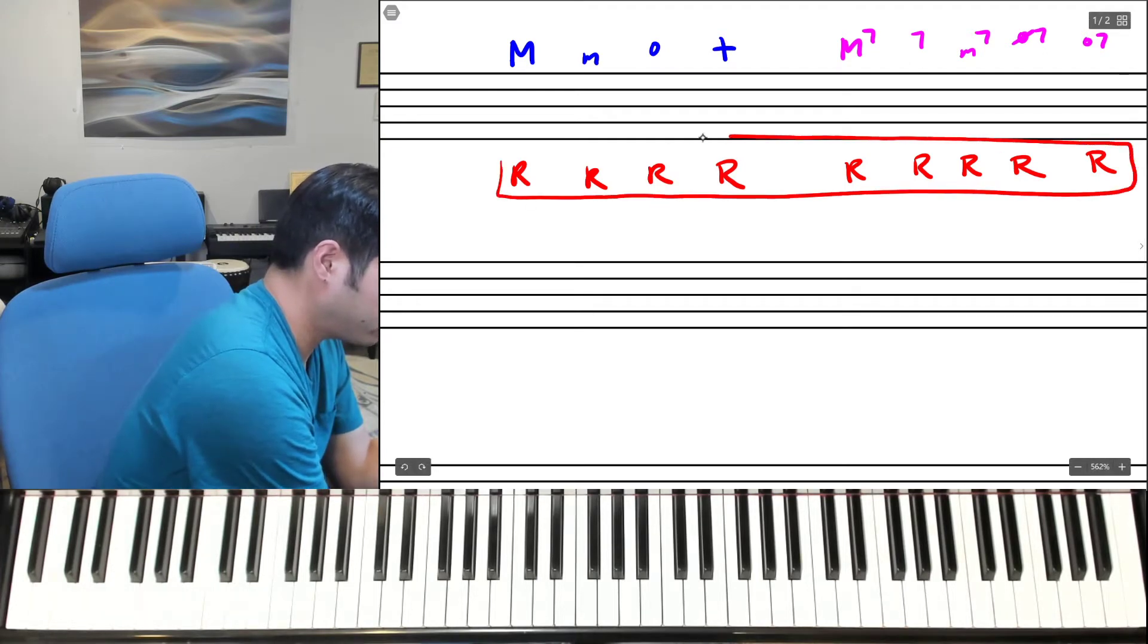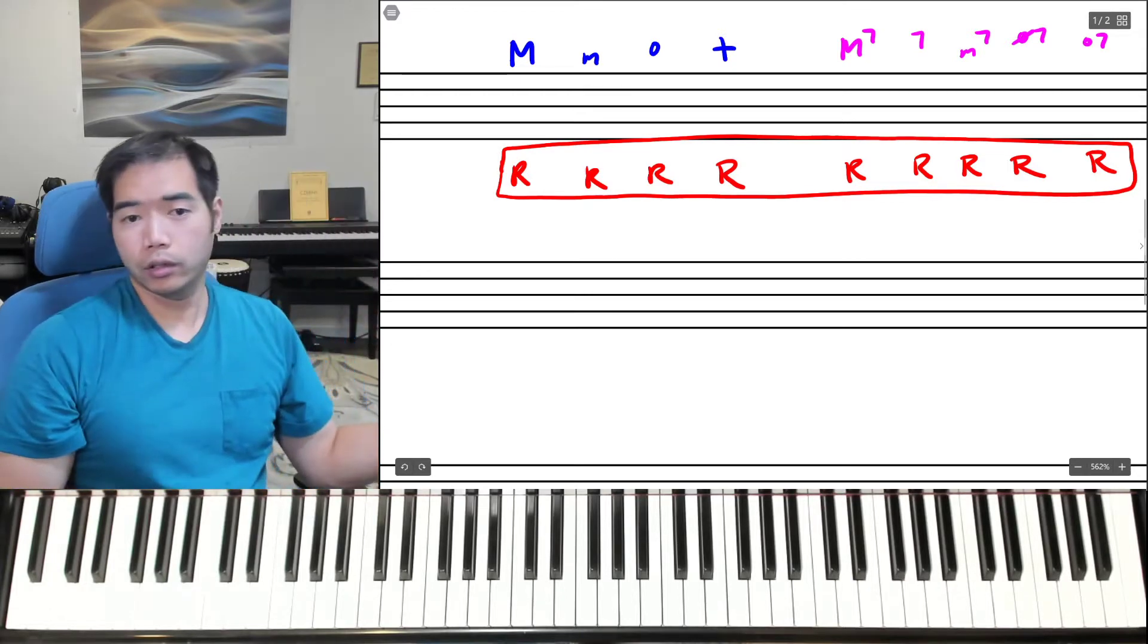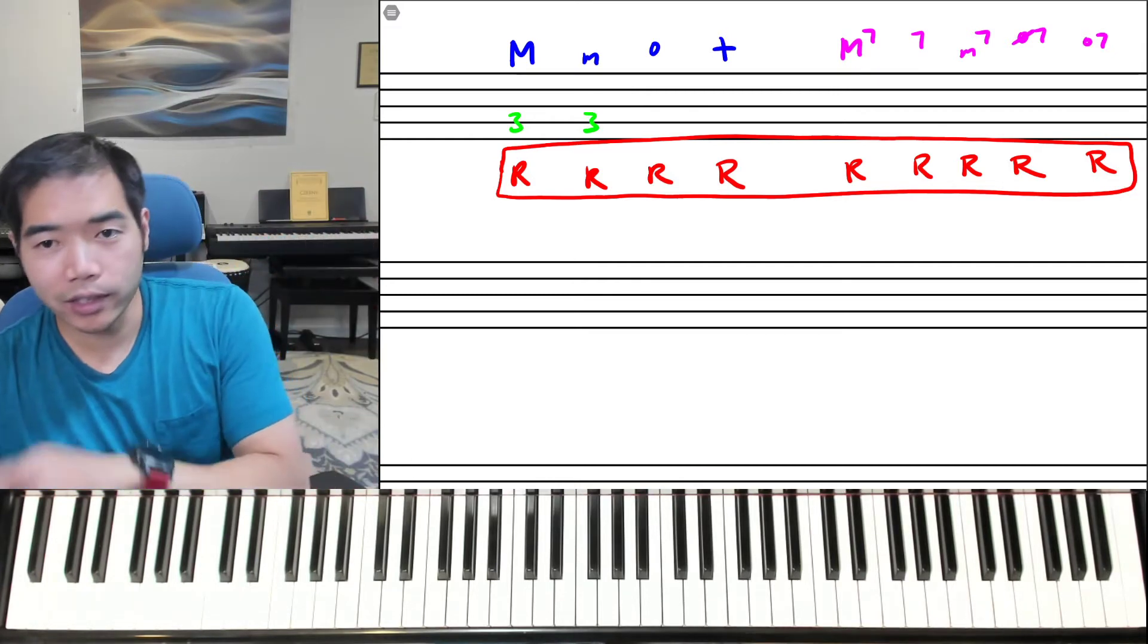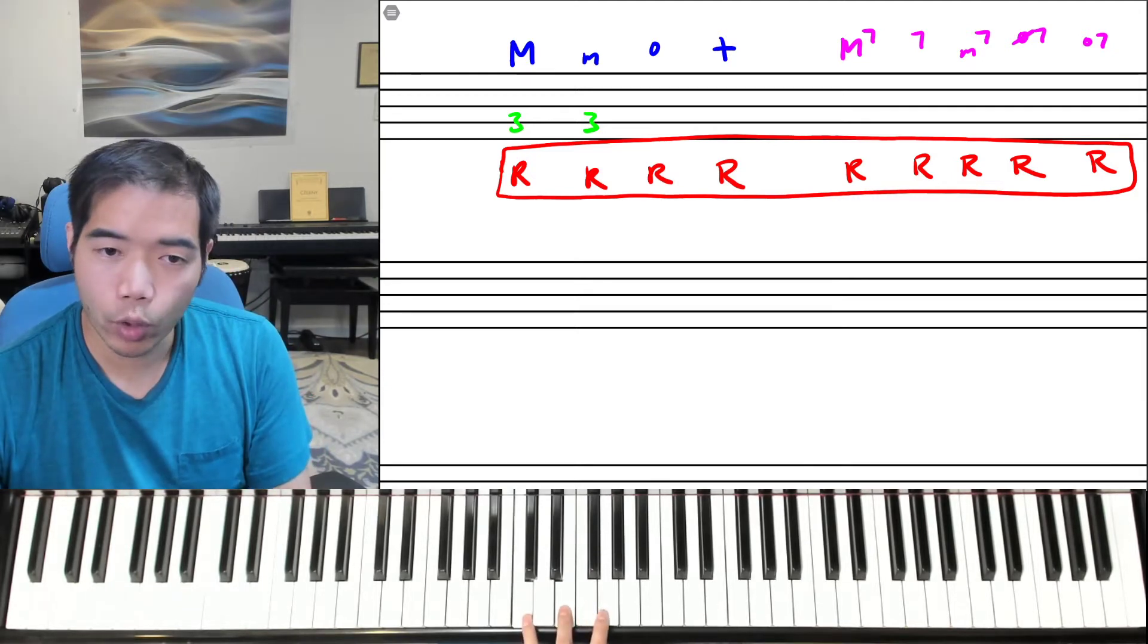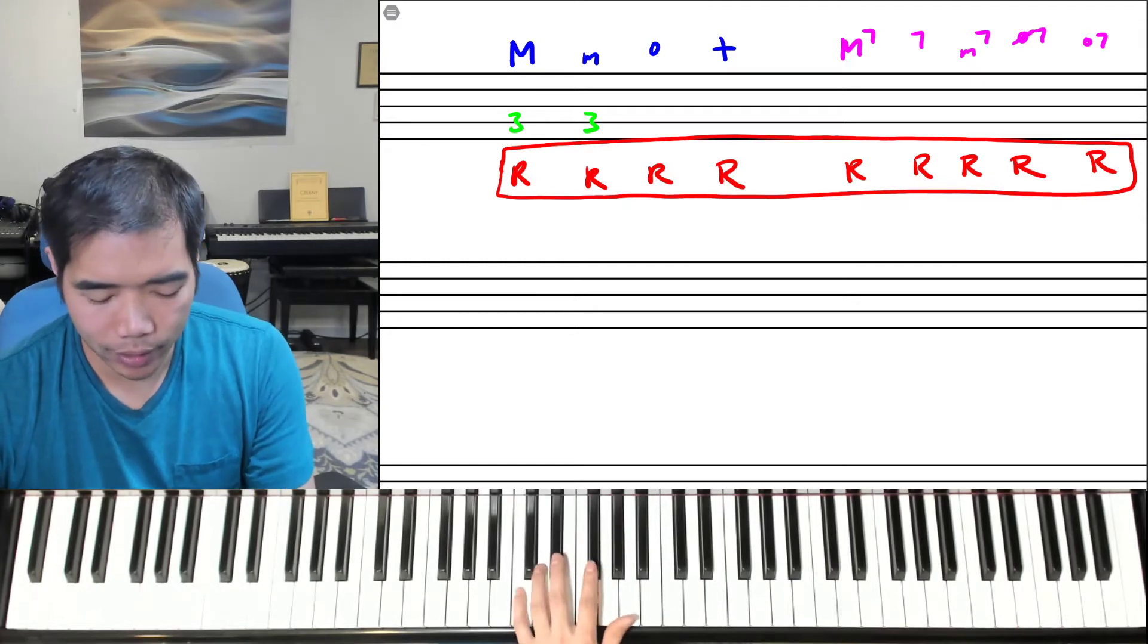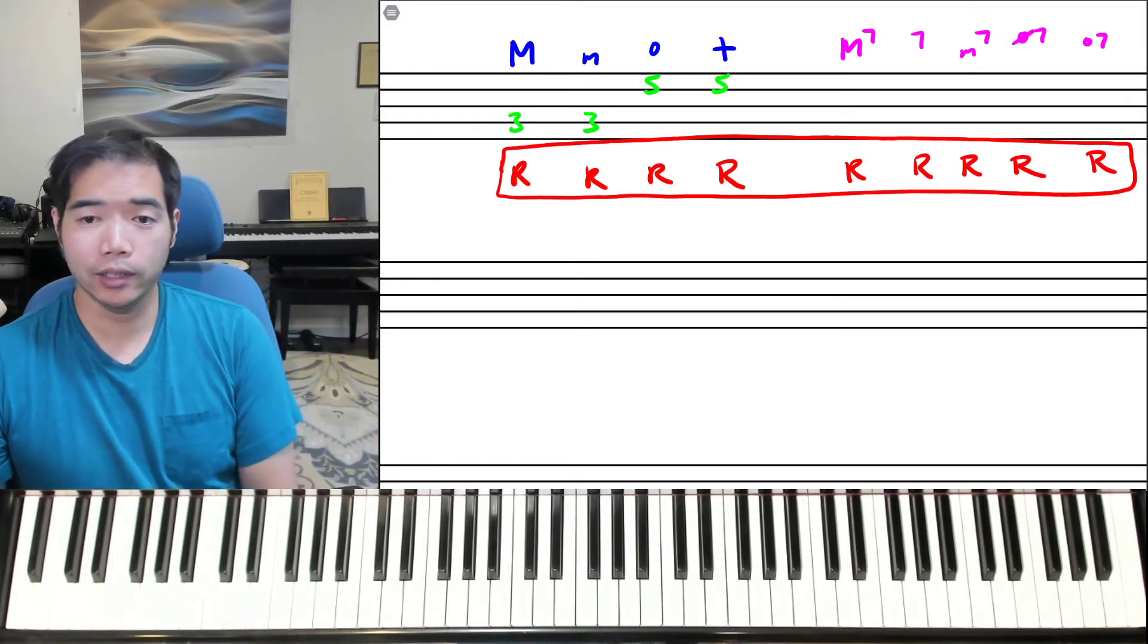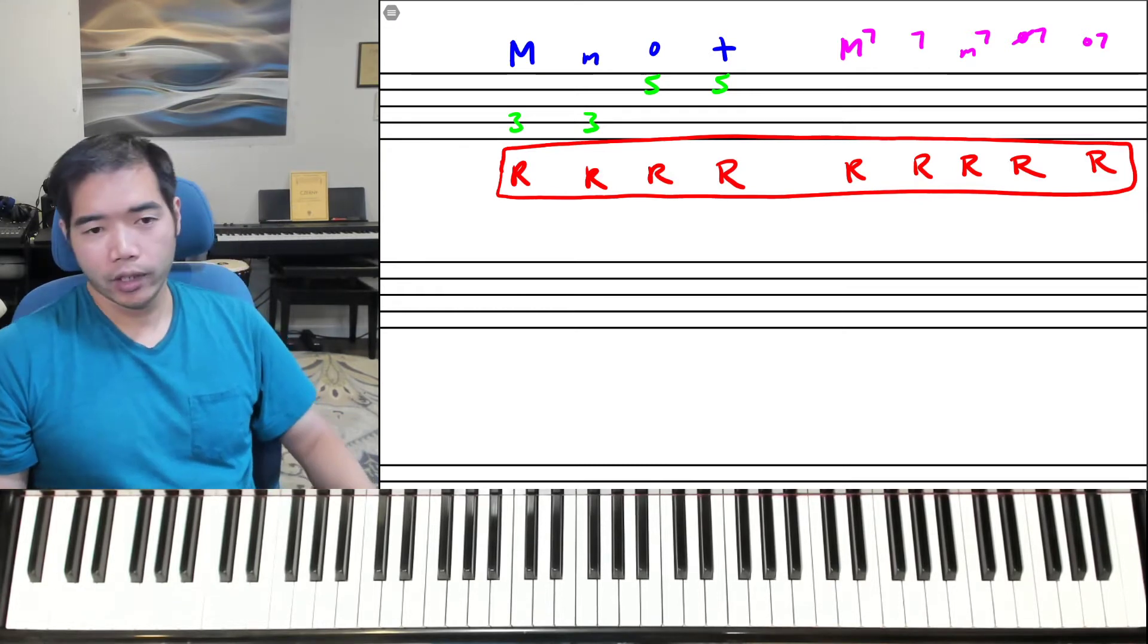The question is, what's the next most important note for each of these? Well, if you take a look at the major triad, we're going to need the third, because the third tells us whether it's major or minor. Same with the minor triad. However, with the diminished and the augmented, we actually only need the fifth. Let me show you why. If I have a major third, we don't know if it's diminished or augmented because we don't have the fifth to tell us. In order to be augmented, we have to raise the fifth a half step higher. To be diminished, we need to lower the fifth a half step. So actually, the fifth of the chord is necessary for diminished and augmented.